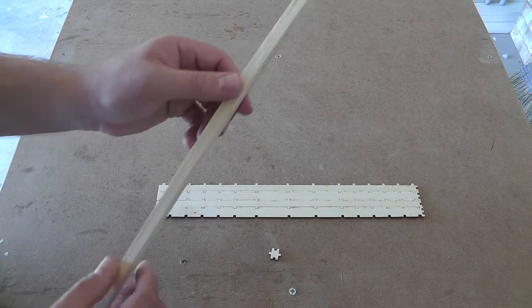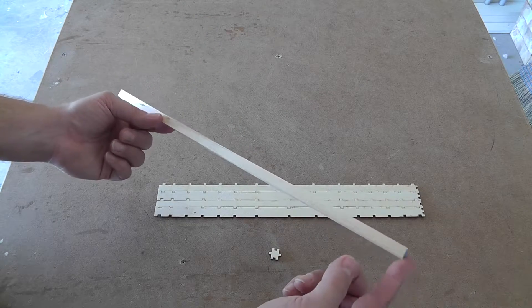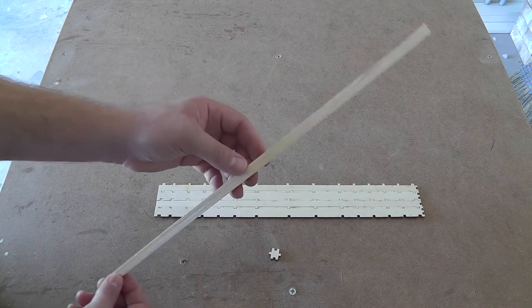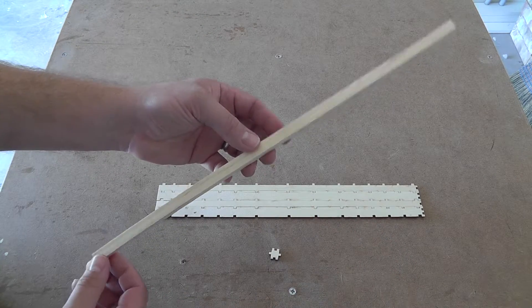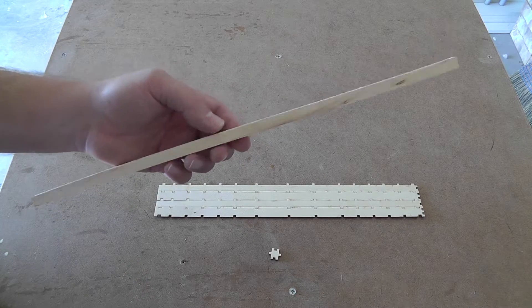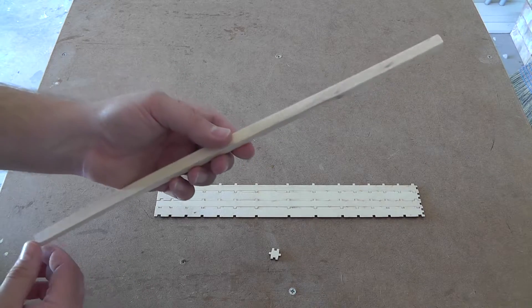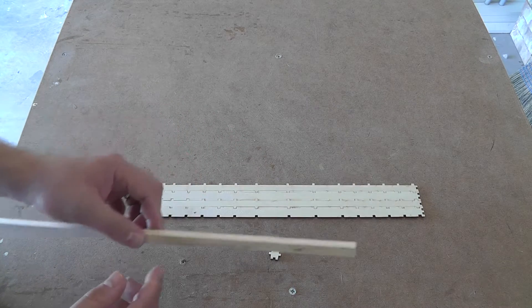Then what you're going to do is take your dowel rod and once you pick your dowel rod all you need to do is measure off 16 inches and cut. This is exactly 16 inches long. You can make it a little longer if you want to but 16 inches gives you a little bit of play room and I'll show you that here in a minute.